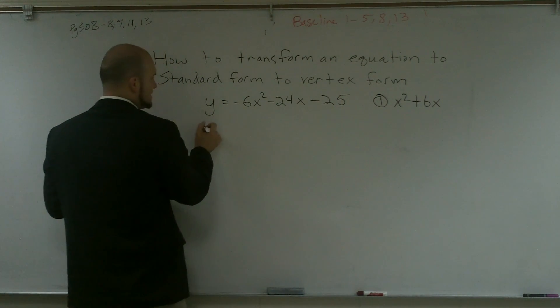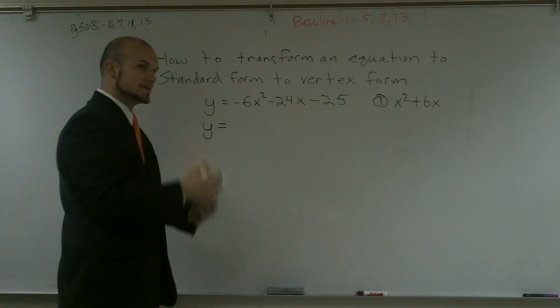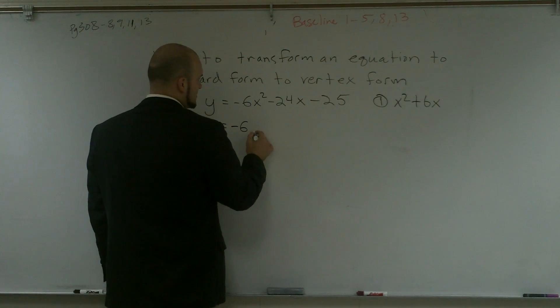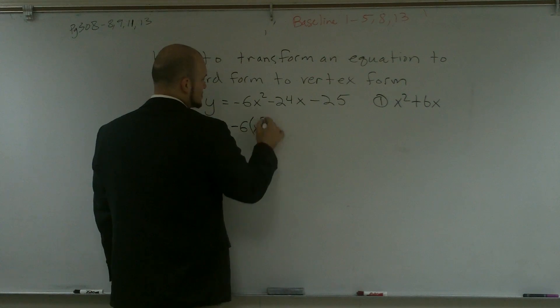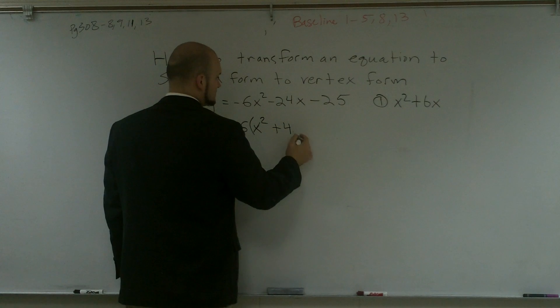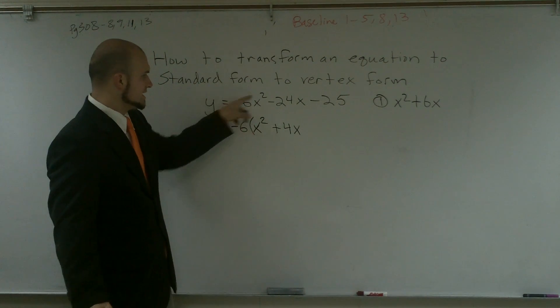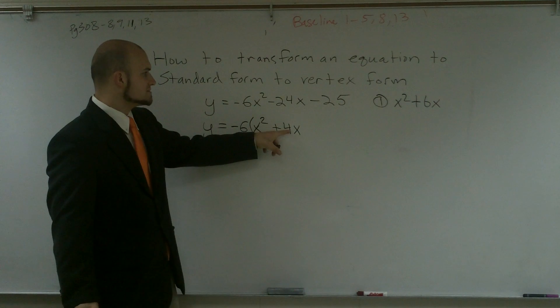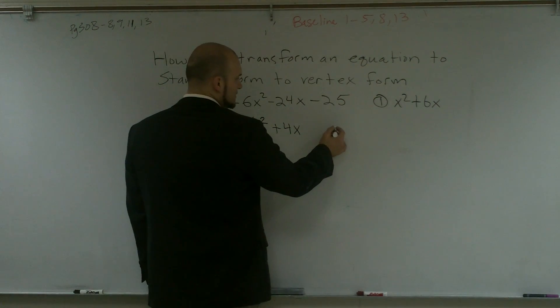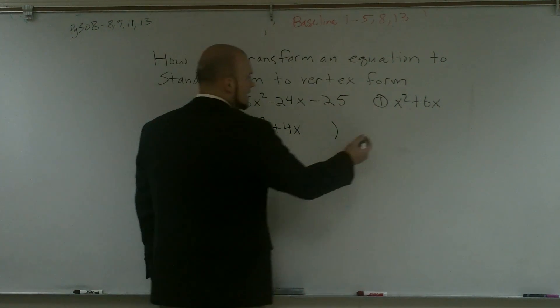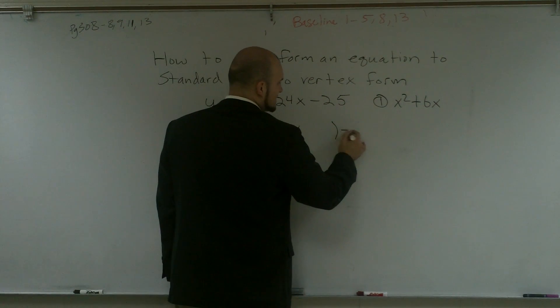So I'm going to factor out a negative 6. Factoring out a negative 6 is just kind of the same thing as dividing out. So we have negative 6, so I'm going to be left with x squared and then plus 4x. You just want to double check your work. Negative 6 times x squared is negative 6x squared. Negative 6 times 4 is going to be my negative 24. Then I'm going to leave a little bit of extra room because remember I want to complete my perfect square, and then I'm going to put this minus 25 at the end.